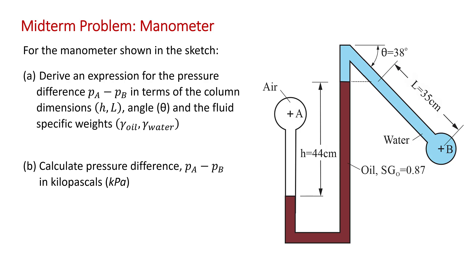This is a manometer problem taken from an old midterm exam. As you can see, the manometer has three fluids. There's water in this inclined leg at 38 degrees from the horizontal, oil with a specific gravity of 0.87, and in this vertical section here we have air.